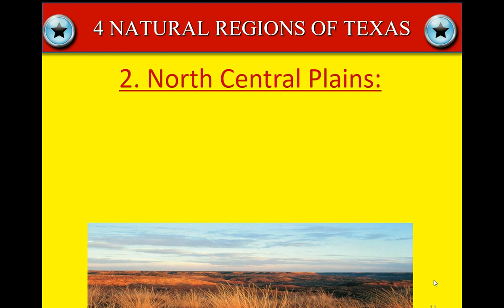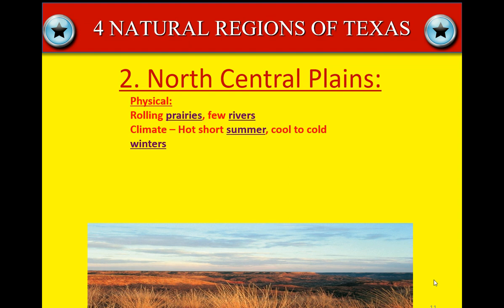Now the north central plains, or central plains, the second region. The physical characteristics of the north central plains are rolling prairies and very few rivers. The climate is very hot, short summers and cool to cold winters — though that's kind of changed lately, as the summers last a lot longer than they used to. The winters do get cold; if you've ever been in Dallas in the wintertime or just north of Dallas, it gets bitter cold. There's not near as much rainfall in the north central plains as there is down in the coastal plains closer to the Gulf. You also have high winds and tornadoes, which are bad in the central plains.